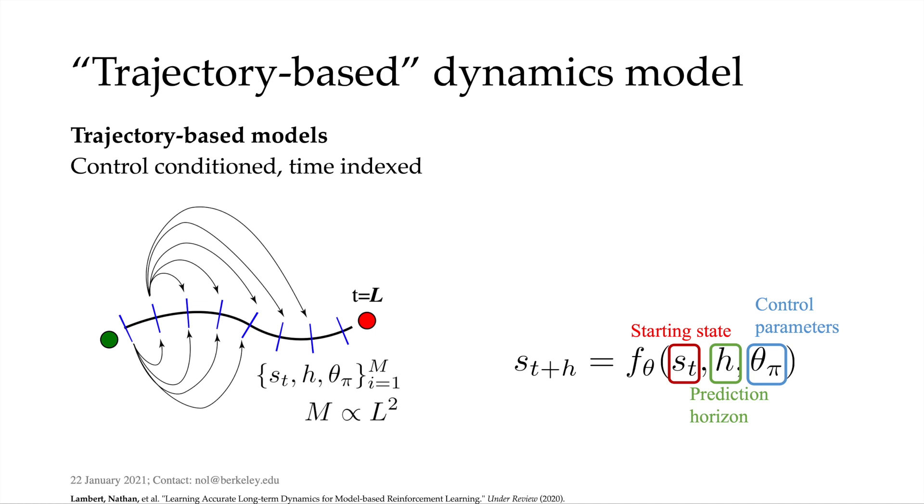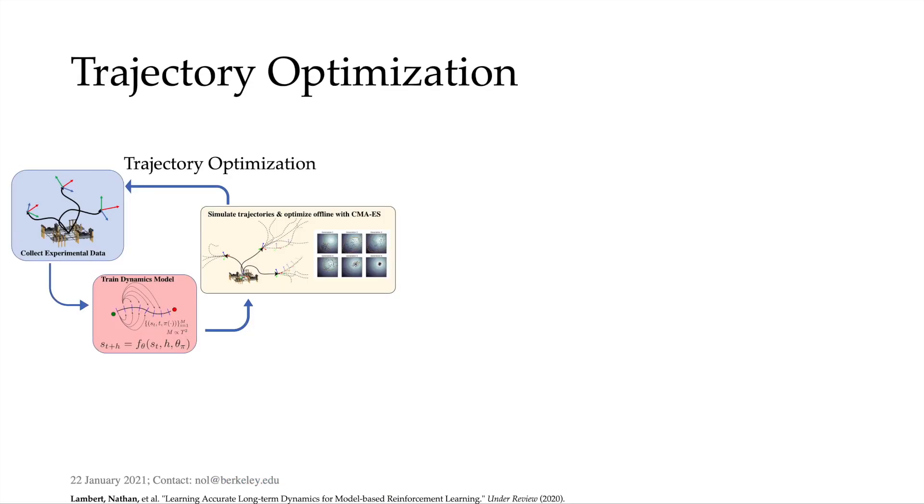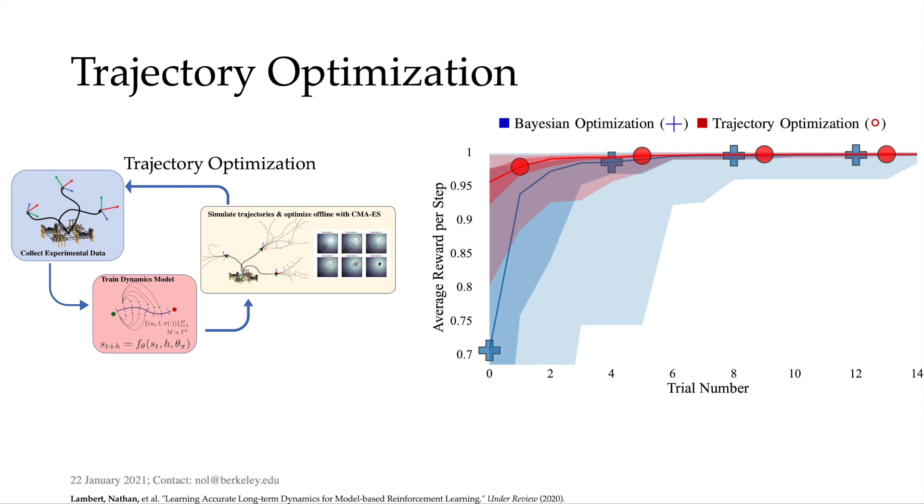Using our new model, we have a method called trajectory optimization, where we collect experimental data, train a trajectory model, and then use an offline optimizer, such as CMAES, to choose the next parameter for evaluation. In iterative tasks, this can be very sample efficient and leverage the local simulation properties of a dynamics model.